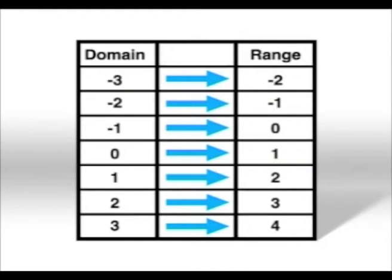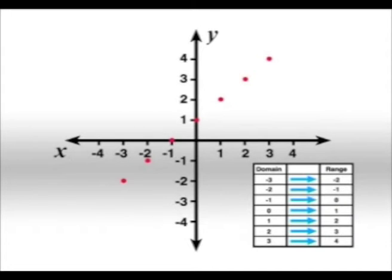Here we have the points from the first relation plotted on a set of axes. It's quite clear that for each value in the domain, that means each value on the x-axis, there is only one corresponding y-value.